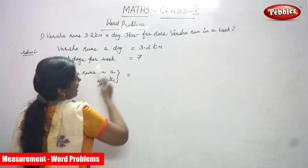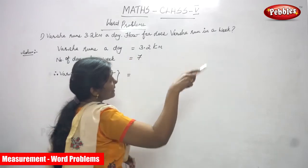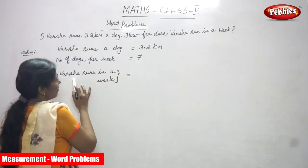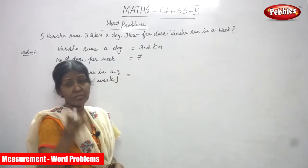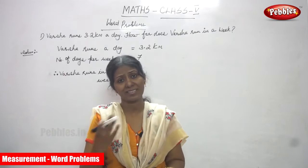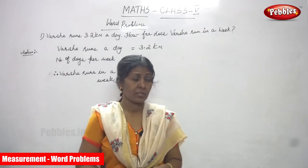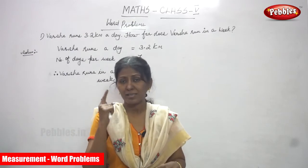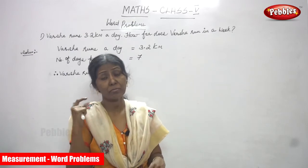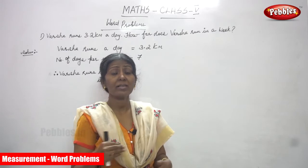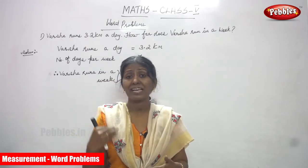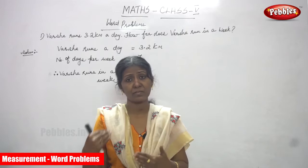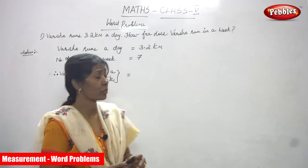The question is how far does Varsha run in a week? For the 7 days how many km she runs? That means multiplication because they have given only one day. One day measurement is given but they are asking for 7 days. That means they are given one and asked many. It is multiplication.